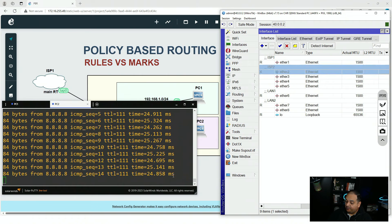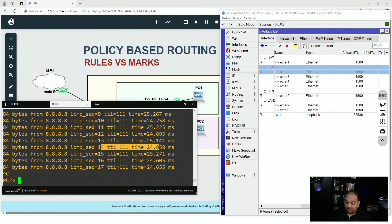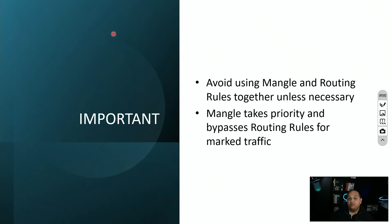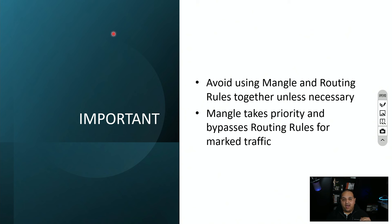Testing with a continuous ping to Google, I disable ISP2. The ping continues successfully and a traceroute shows traffic now using ISP1. When using routing marks with Mangle, the default failover action is 'lookup' — it automatically falls back to the main routing table. An important note: avoid using Mangle and routing rules simultaneously unless necessary. If you do, Mangle has higher priority — packets already marked in Mangle will never be processed by routing rules.